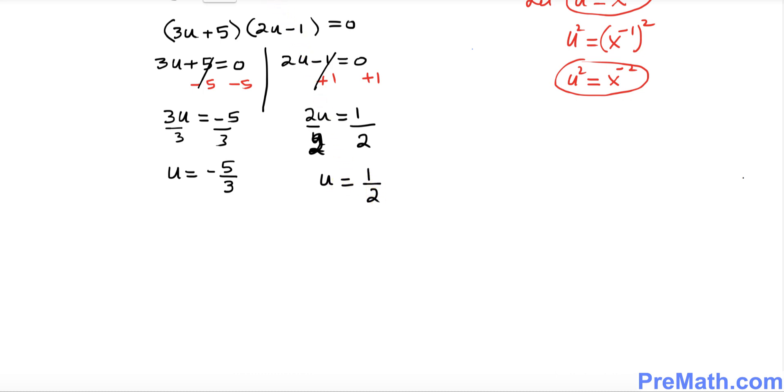So now let's go back and replace these u's with the x variable. So how much was u? u was x power negative 1, isn't it? So x power negative 1 equals negative 5 over 3, and same thing, this is going to be 1 over 2 as well. So far so good.